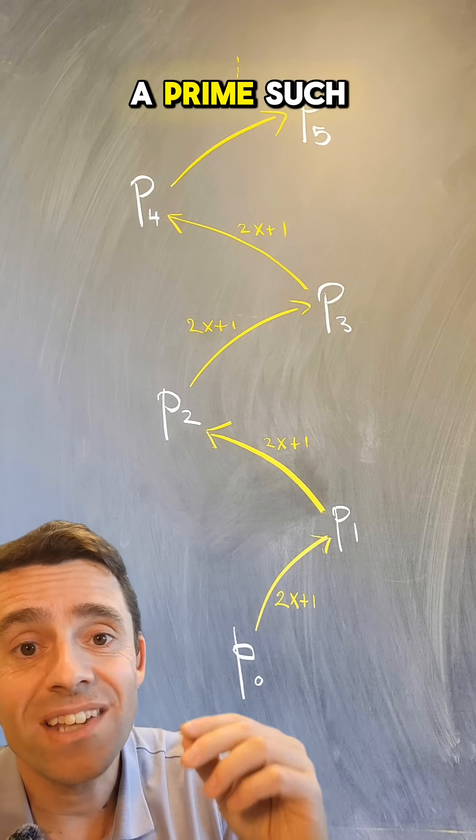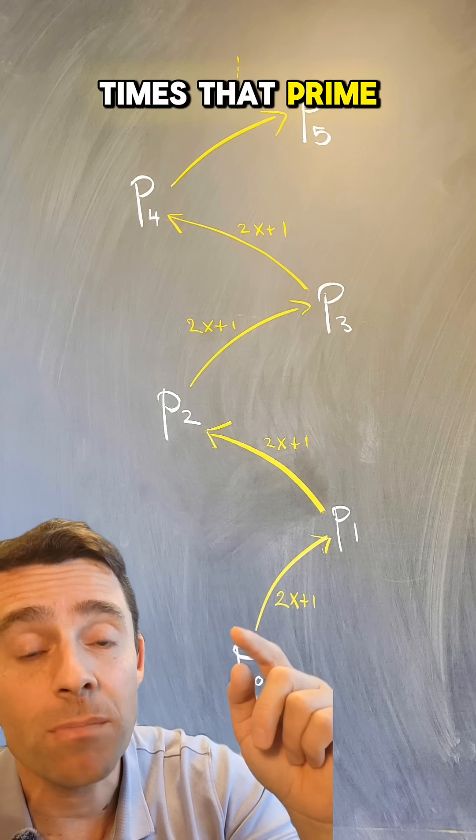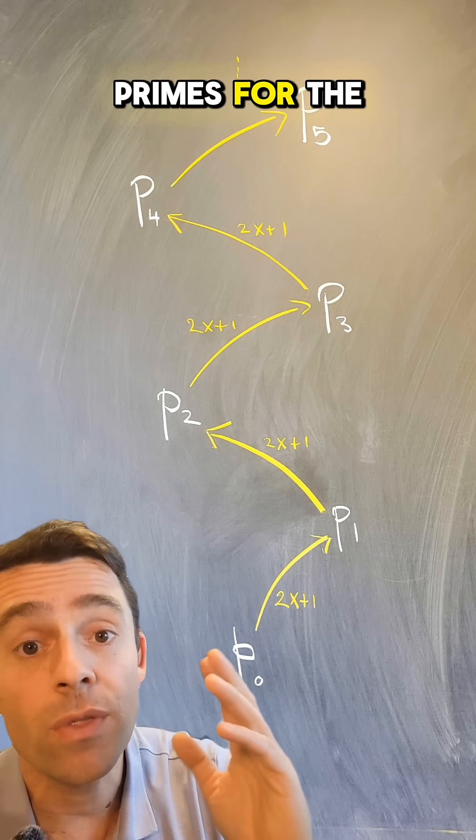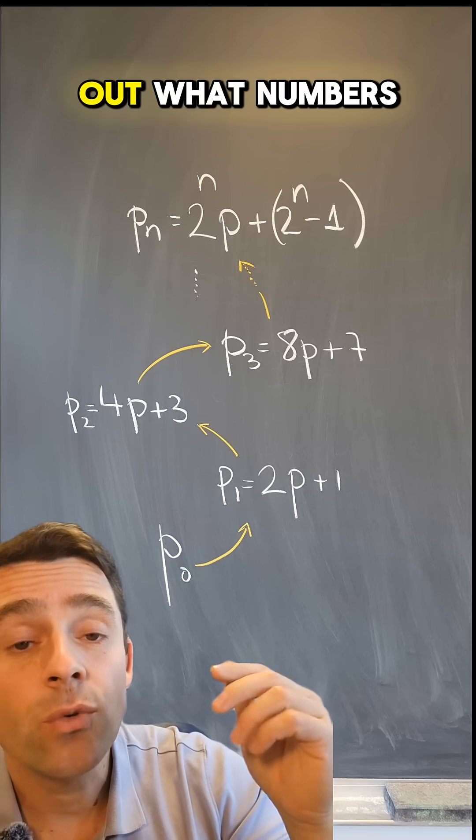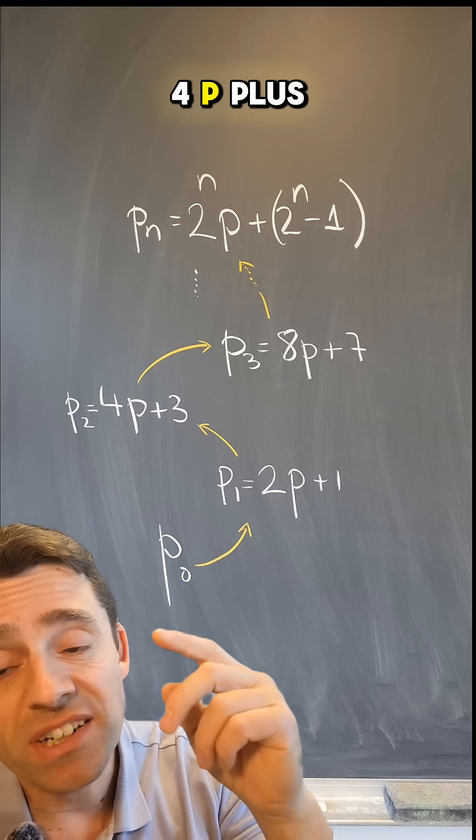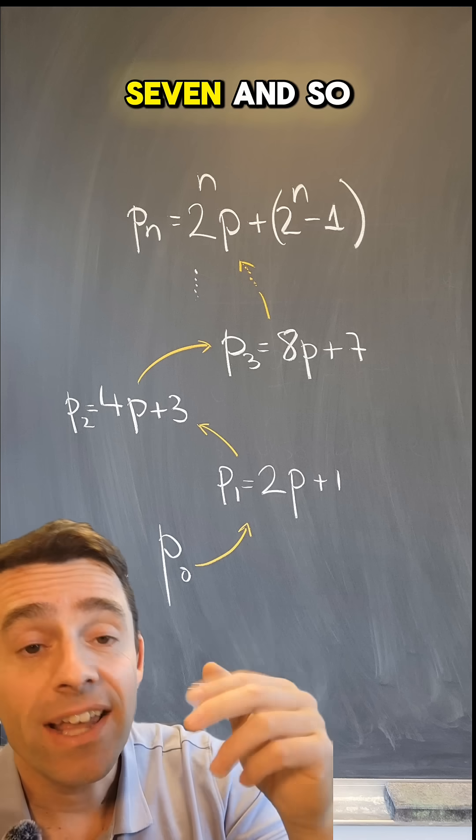There cannot be a prime such that p and then 2 times that prime plus 1 and so on, that is an infinite chain of primes for the following reason. If you figure out what numbers you are getting from p, you are getting p, 2p plus 1, 4p plus 3, 8p plus 7, and so on.